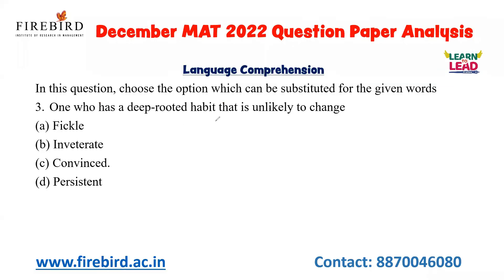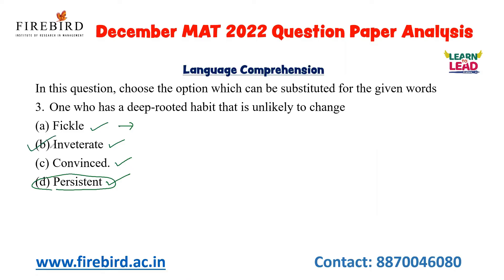The next phrase is 'one who has a deep-rooted habit that is unlikely to change.' The options are fickle, inveterate, convinced, and persistent. Fickle means one who changes frequently. Persistent means continuing firmly in an opinion. The best answer for this phrase is inveterate.